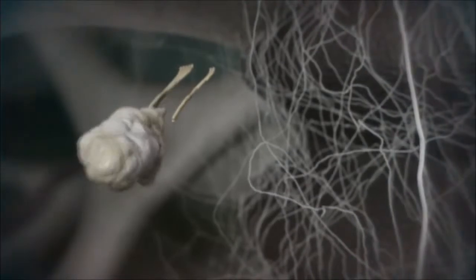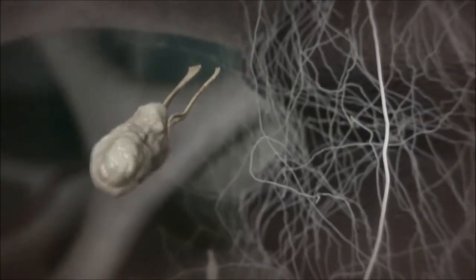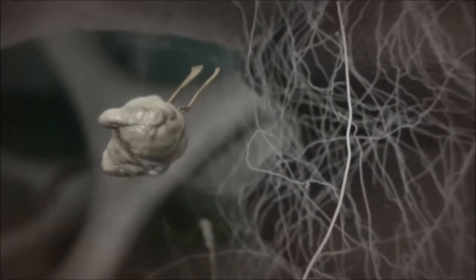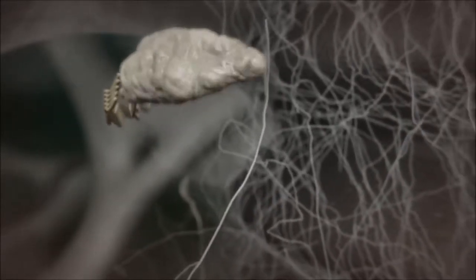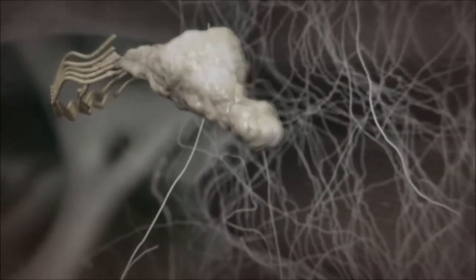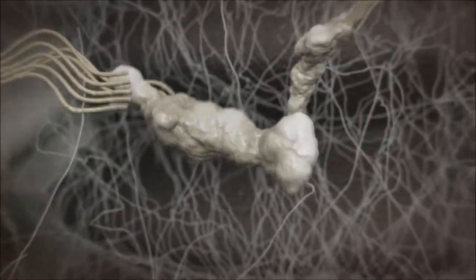Fibroblasts appear on the third or fourth day. They migrate into the wound using amoeboid movements. They synthesize the protective and stabilizing components of the extracellular matrix, such as collagen, elastin, and proteoglycans.